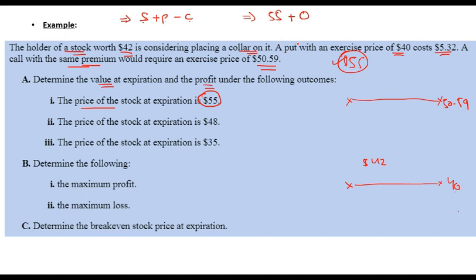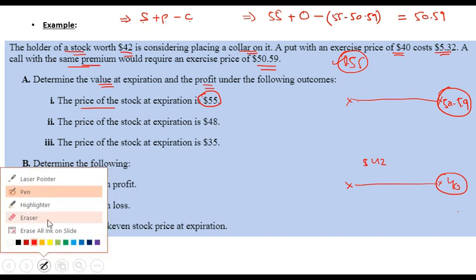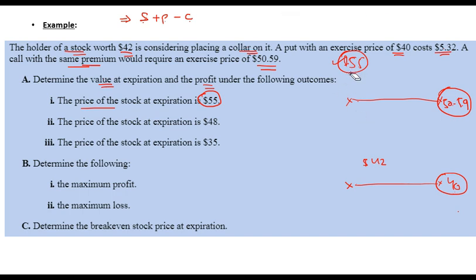Since the call was sold, its value is negative: minus ($55 − $50.59). The total value is capped at the ceiling of $50.59. If the price is beyond the ceiling, your value equals the ceiling — $50.59 — because that is the maximum you can receive. You don't even need to calculate; just know that value equals the ceiling price.